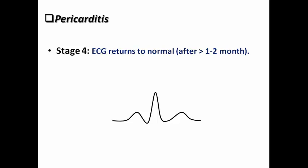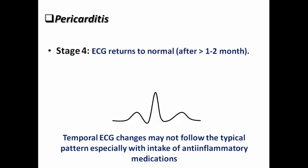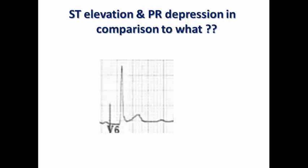These temporal ECG changes may not follow the typical pattern, especially since most of these patients will be diagnosed early and started on anti-inflammatory medications like NSAIDs, colchicine, or aspirin. These medications will alter the expected temporal changes. However, this is the most commonly described evolution in the literature regarding pericarditis ECG changes.